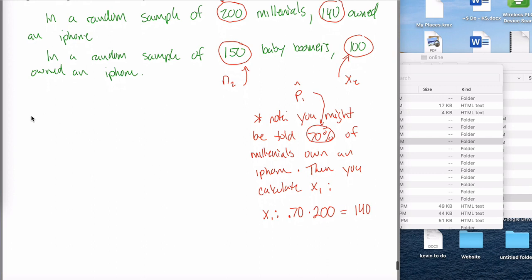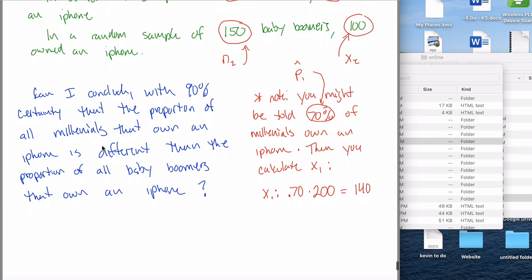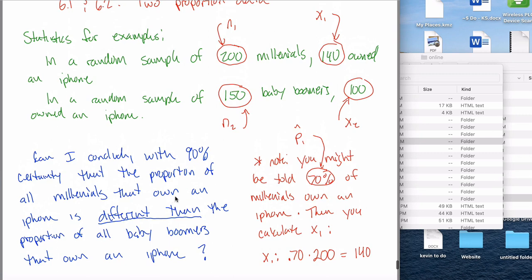So I guess without further ado, maybe I'll say, can I conclude with 90% certainty that the proportion of all millennials who own an iPhone is different than the proportion of all baby boomers who own an iPhone. And when I ask you this question, what you're really looking for are the same key things that we looked for before. This 'different than' will be really important when we state our null and alternative hypotheses, and you want to be able to pull out all this information from the problem.